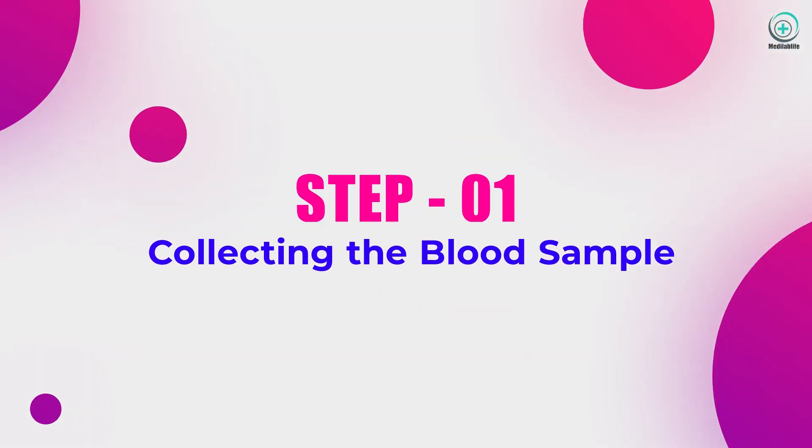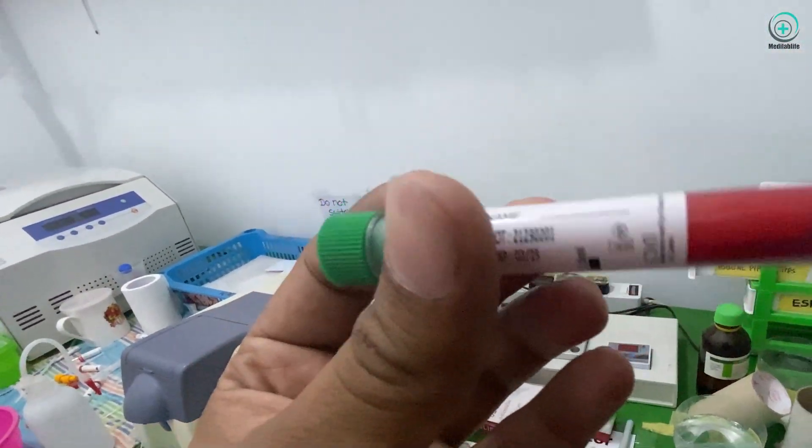Step 1: Collecting the blood sample properly. Collect a patient's blood sample into an EDTA tube to prevent clotting.